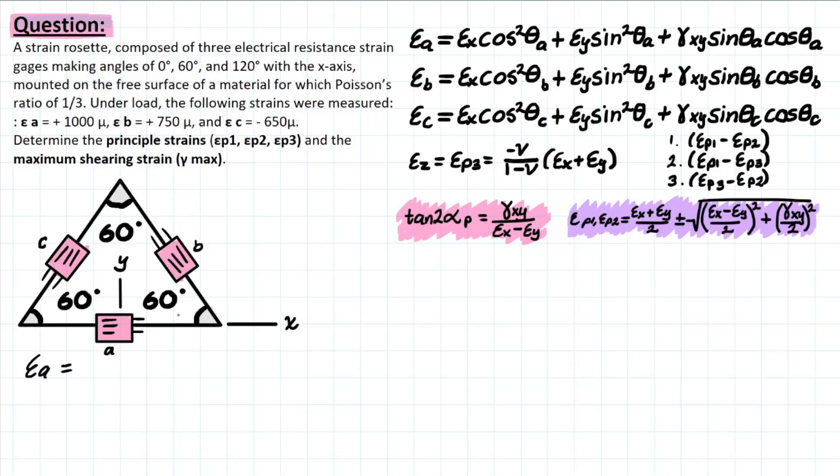That is given to us as 1,000, and this is a pretty much unitless measurement, where you have millimeters per millimeter, or whatever reference you're using for the dimension. But this is given to us as 1,000.